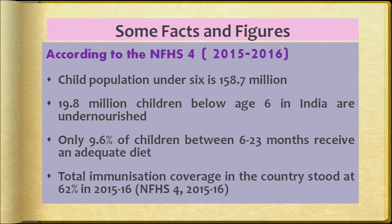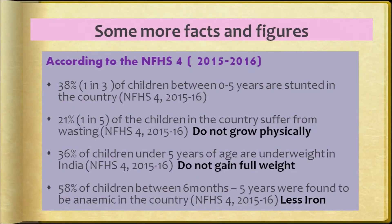Only 9.6 percent of children between 6 to 23 months receive an adequate diet. Total immunization coverage in the country is now at 62 percent, which is a good figure, but still many children are not getting immunized. According to the NFHS survey, 38 percent of children — that is 1 in 3 children between 0 to 5 years — are stunted.